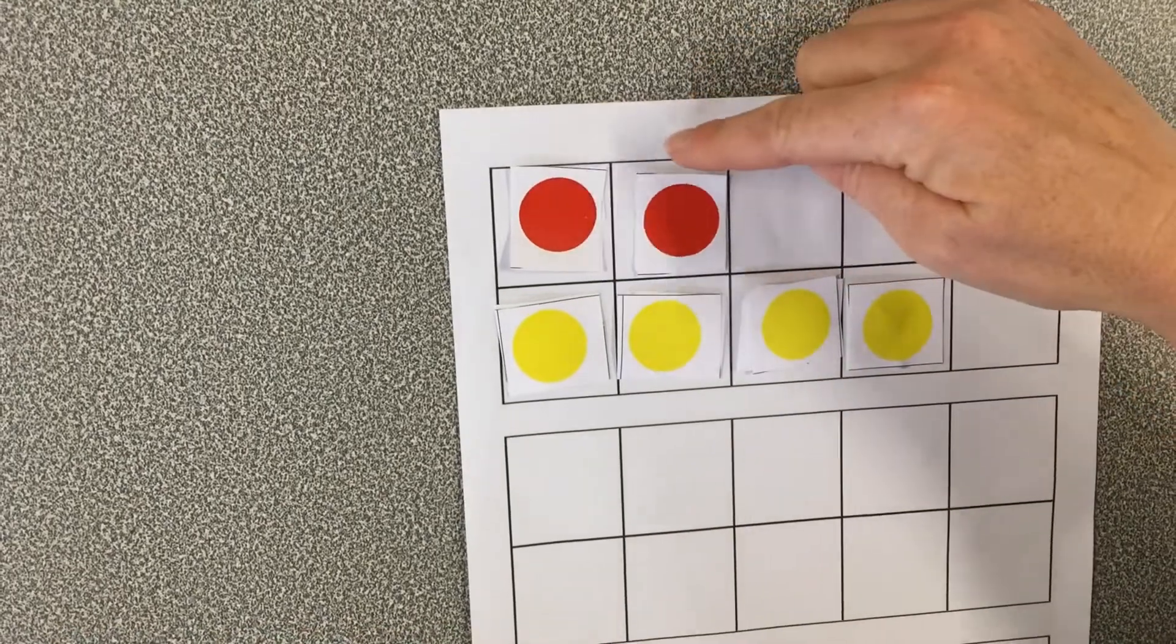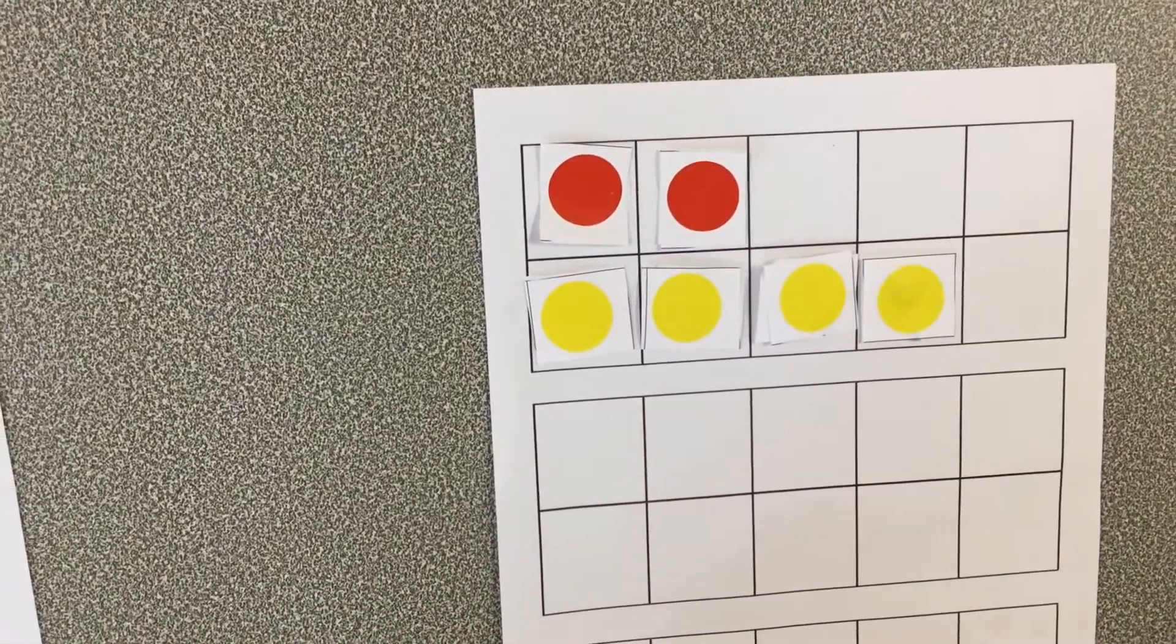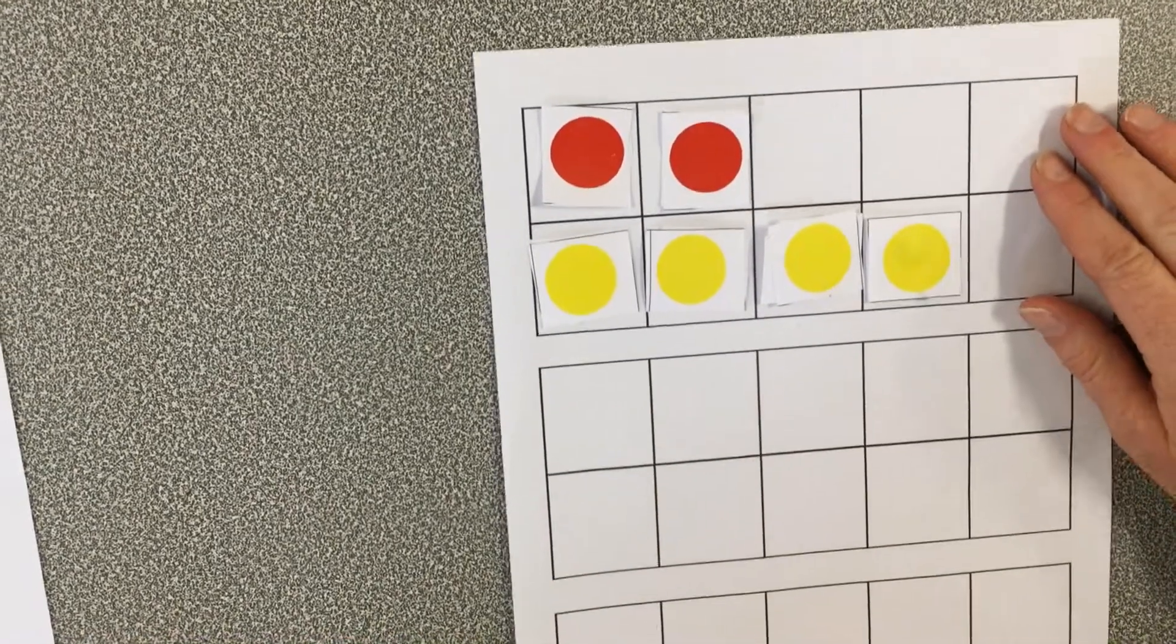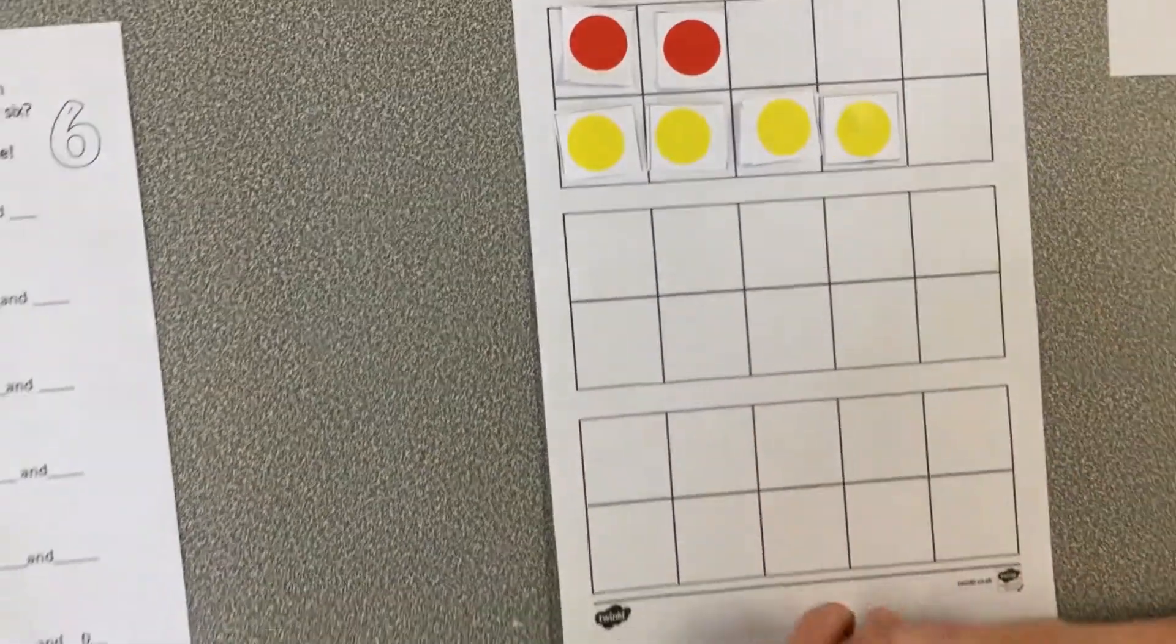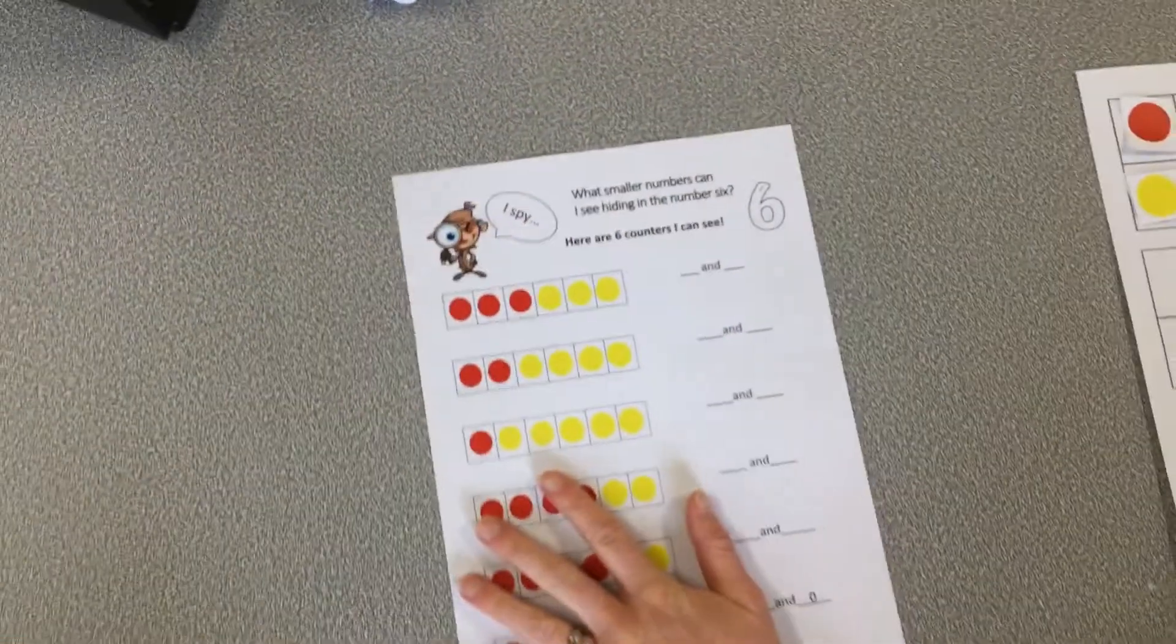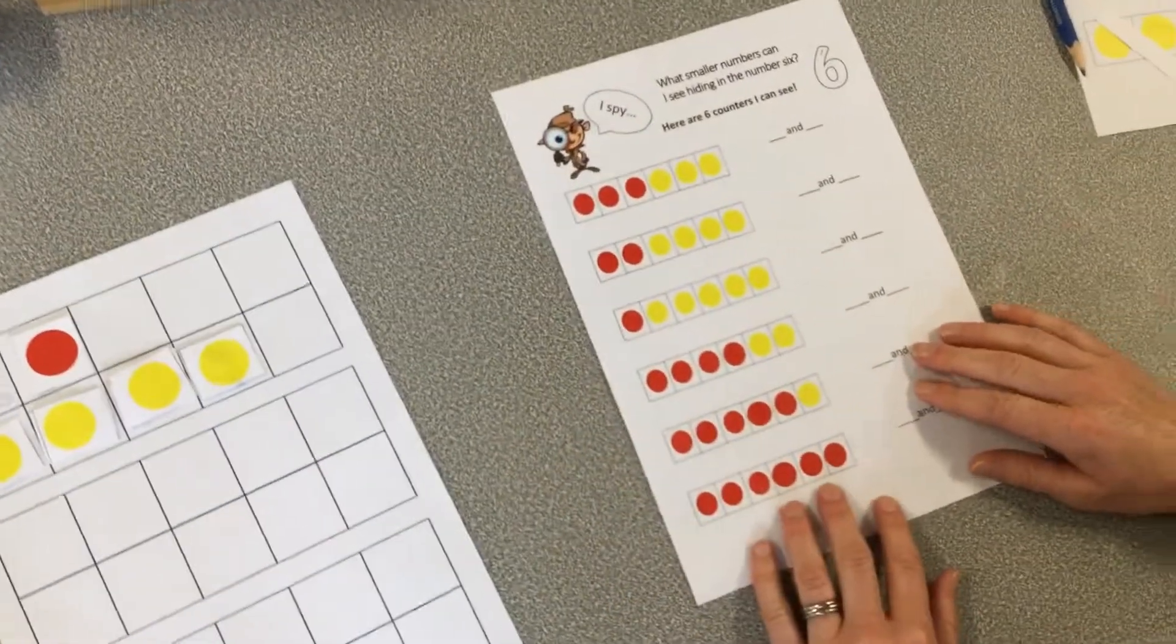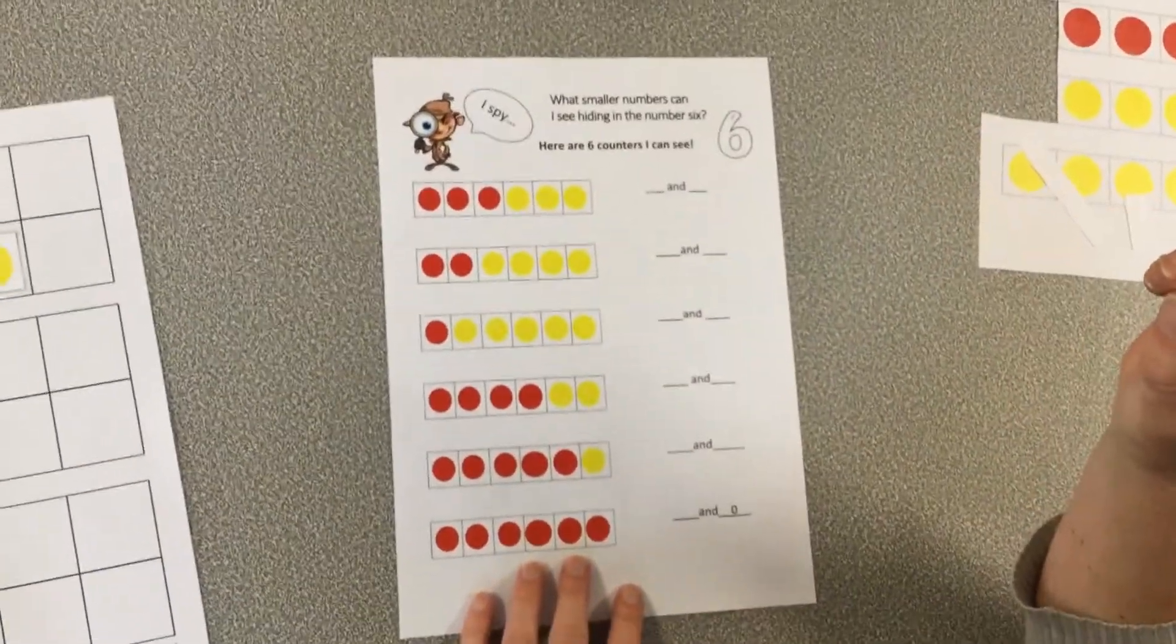Let's check. One, two, three, four, five, and six. Once you've had a go at making the number six and breaking it up into little groups, I want you to go over to this page, which is a little bit similar. You can see those red and yellow counters.